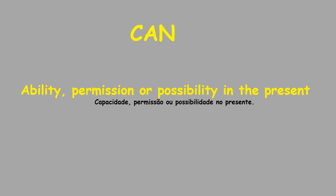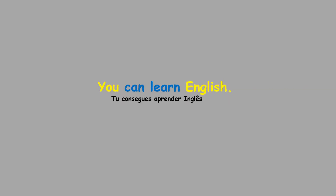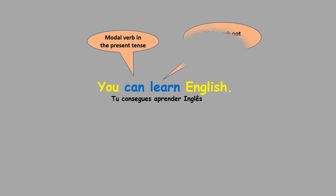Let's see the modal verb 'can'. When you use 'can' you are expressing ability, permission or possibility in the present tense. For example: 'You can learn English.' 'Can' is the modal verb in the present tense and 'learn' is the main verb with no conjugation — it's the verb in the present tense, and you are expressing ability.